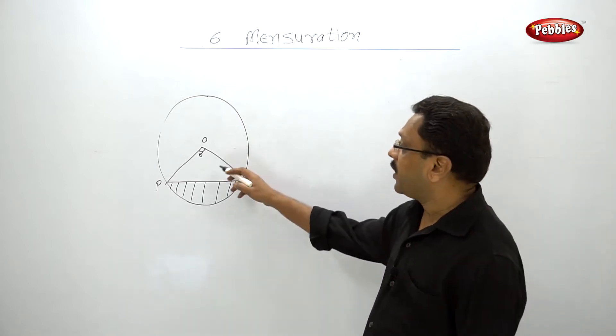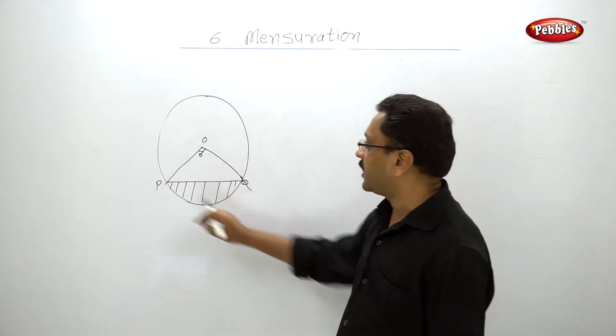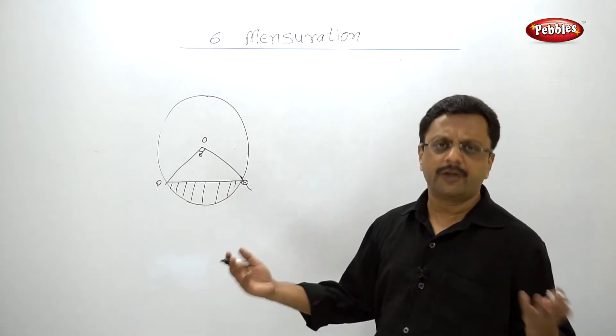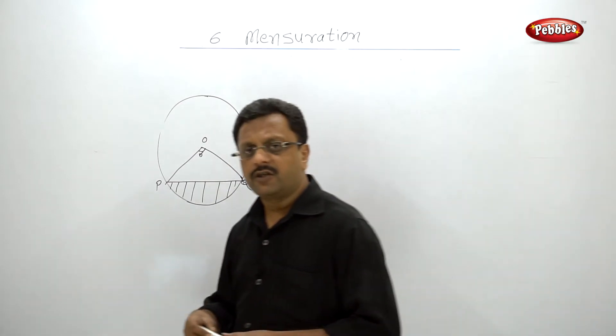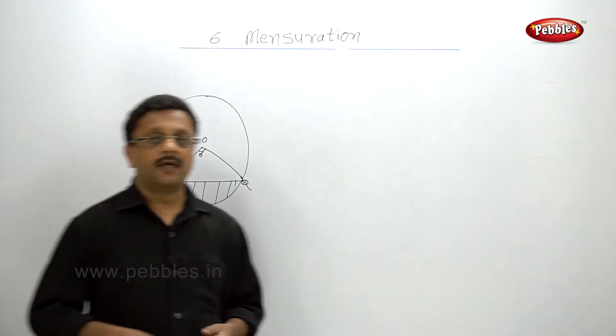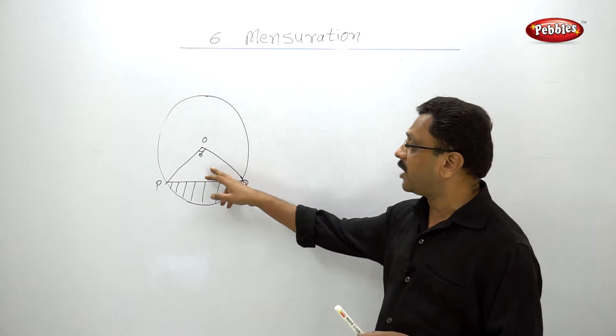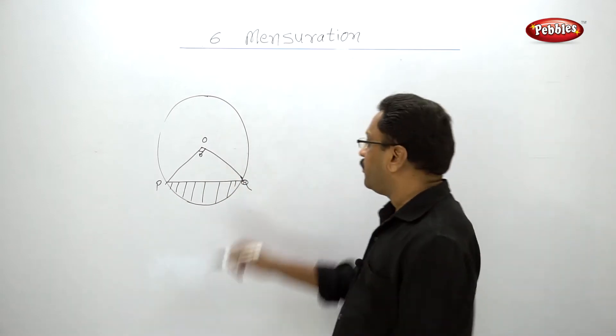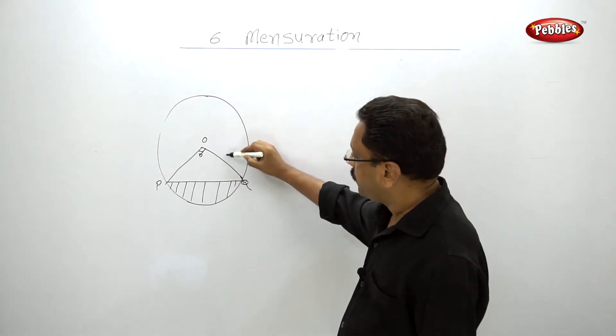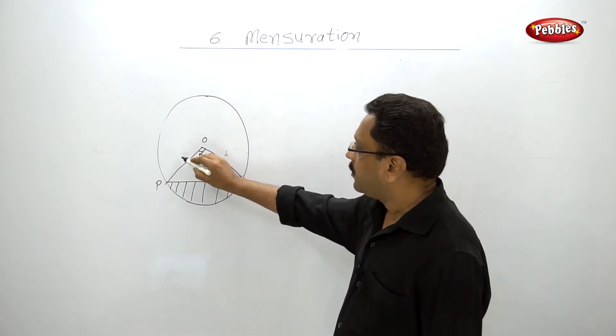Because finding area of sector is easy, you already know that - theta by 360 pi r square, that is the area of a sector. But how will you find the area of this triangle? One thing is sure, we know that this is r and this is r, both are radius, angle is given, how to find out?